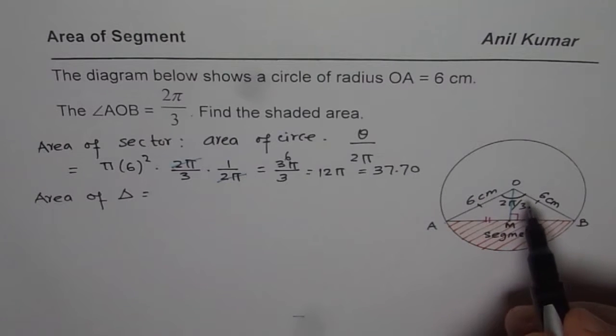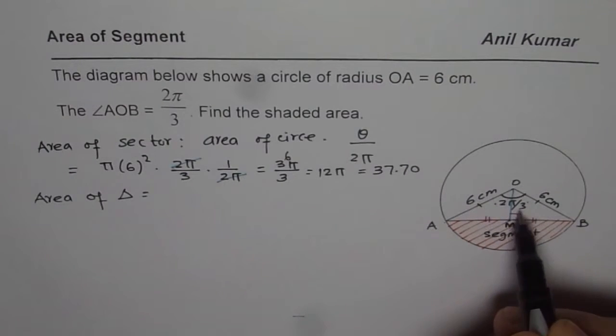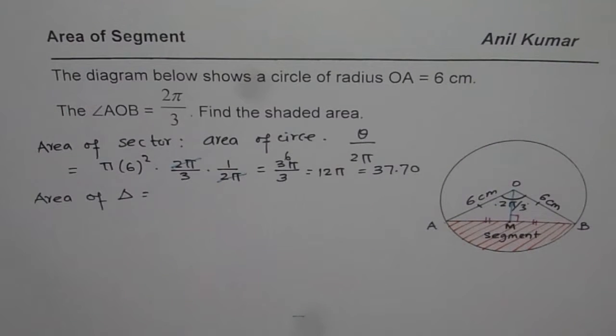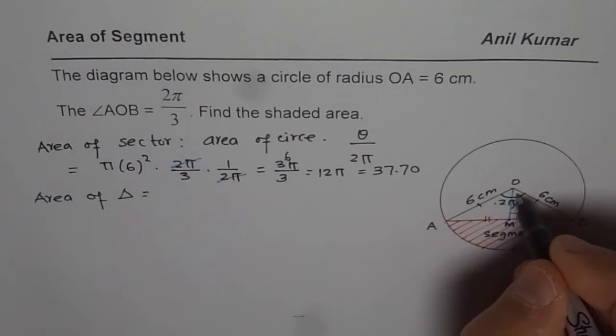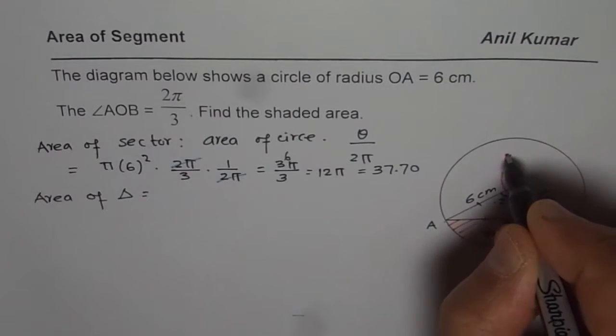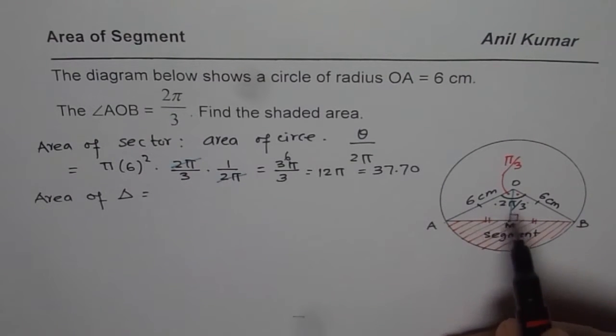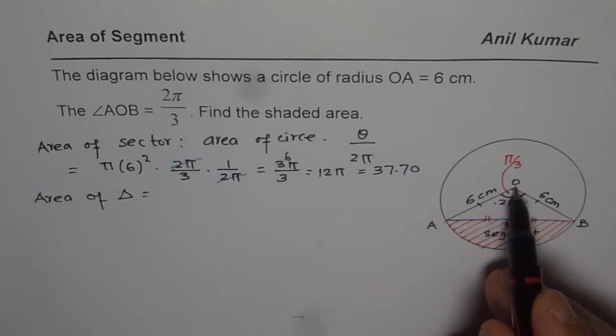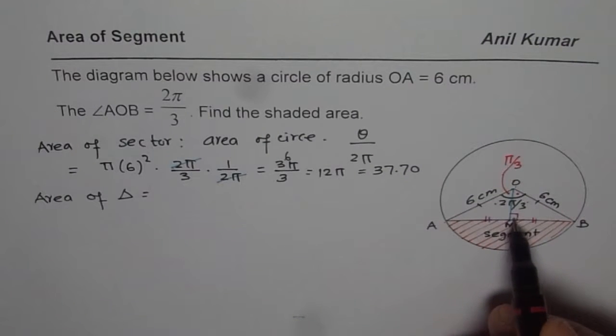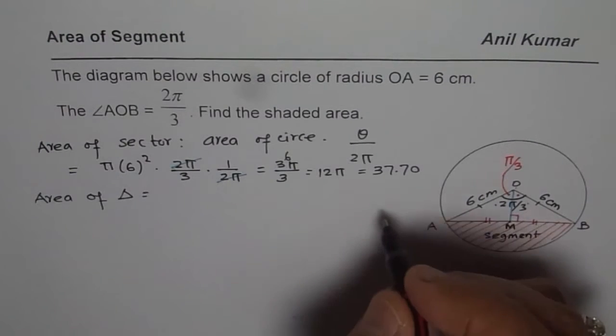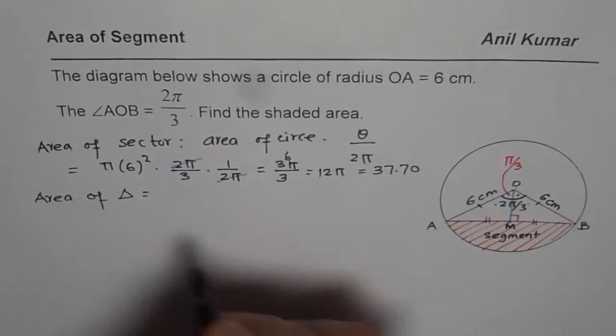Now we can say that the two angles are half of 2π by 3, that means each is π by 3. So each angle here, they are equal and each is π by 3. So now we can actually find AM and OM using sine and cosine of π by 3. So that is what we will do first and then we will find the area.